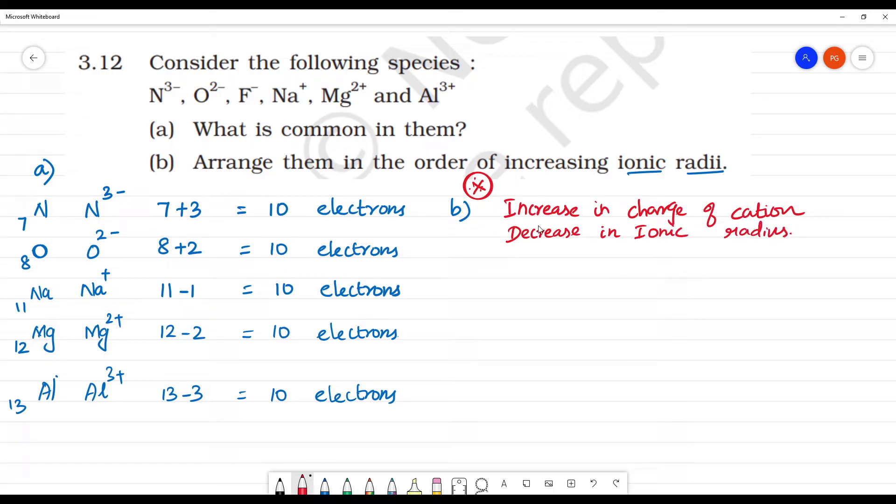More positive charge means less size, or smaller ionic radius. More negative charge means more size. So cations have less size and anions have larger size.